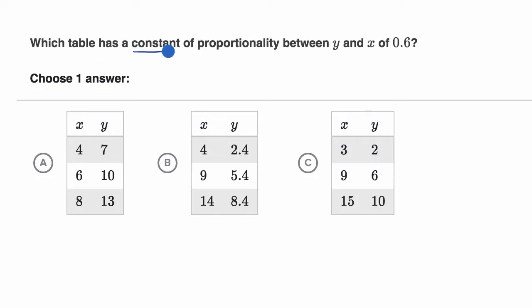We are asked which table has a constant of proportionality between y and x of 0.6. Pause this video and see if you can figure that out.